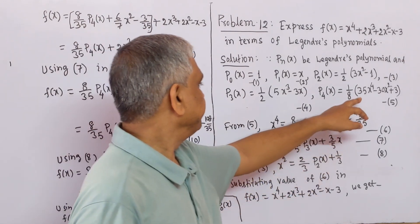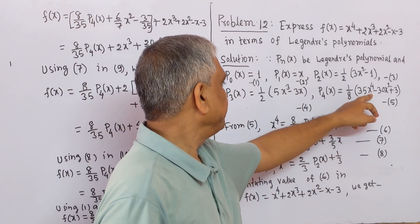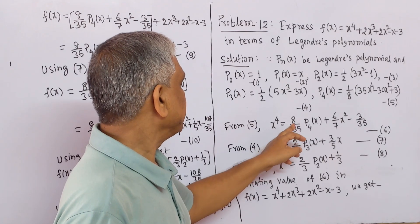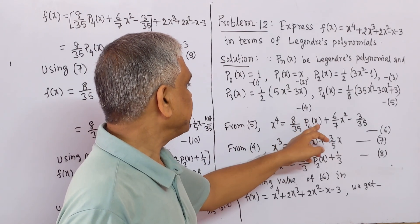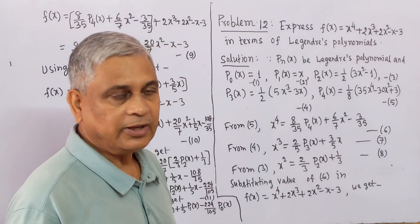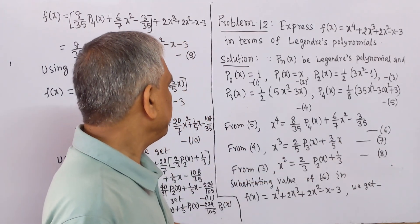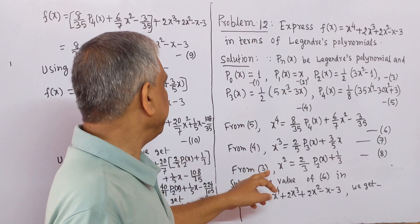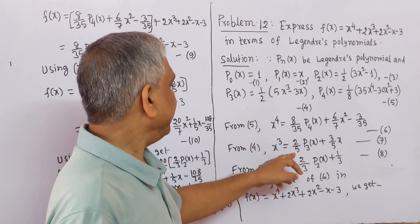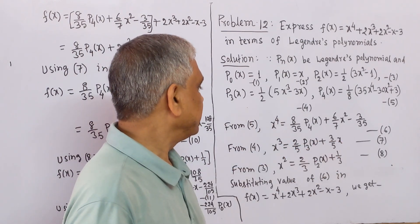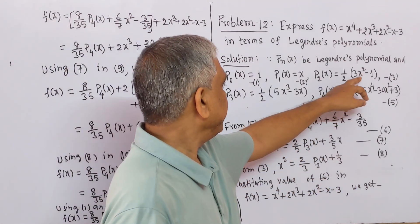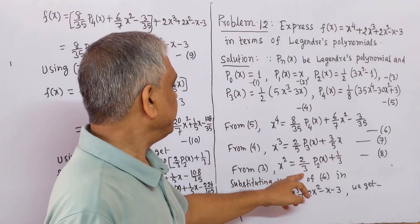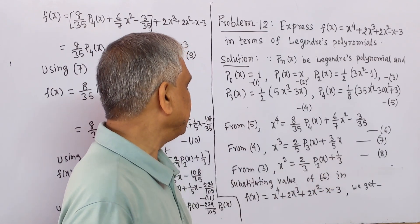From equation 5, solving for x⁴: x⁴ = (8/35) P_4(x) + (6/7)x² - 3/35. This is equation 6. From equation 4, solving for x³: x³ = (2/5) P_3(x) + (3/5)x. This is equation 7. From equation 3, solving for x²: x² = (2/3) P_2(x) + 1/3. This is equation 8.